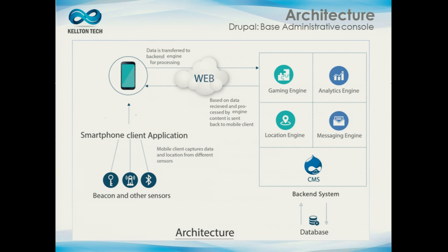Looking at the architecture: on the right side, we have a CMS as a backend — that's Drupal today. We have a gamification engine, an analytics engine, a location engine, and a messaging engine. All of this is exposed headlessly via web services, which work with a mobile device — the device the customer is actually using in a museum, airport, or shopping mall — and that device interacts with the IoT devices, which are iBeacons today.